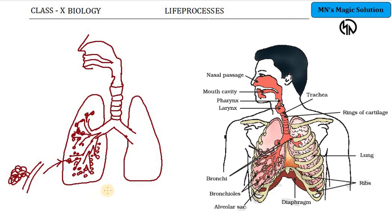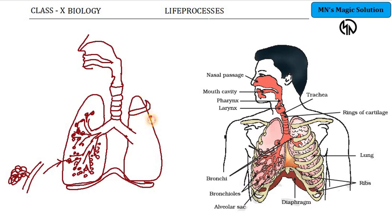Apart from the parts drawn so far, two other important parts are the rib cage and the diaphragm. The diaphragm is below the rib cage — you can draw it as an inverted U shape, like a leaf-like structure, and label it as the diaphragm. For the ribs, you can show them as protective structures surrounding the lungs on both the left and right sides.